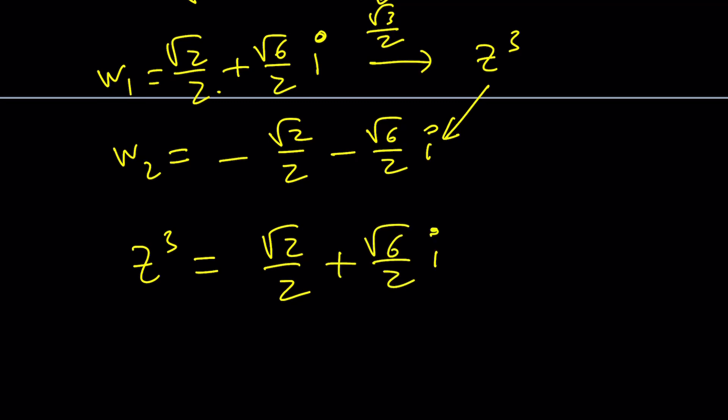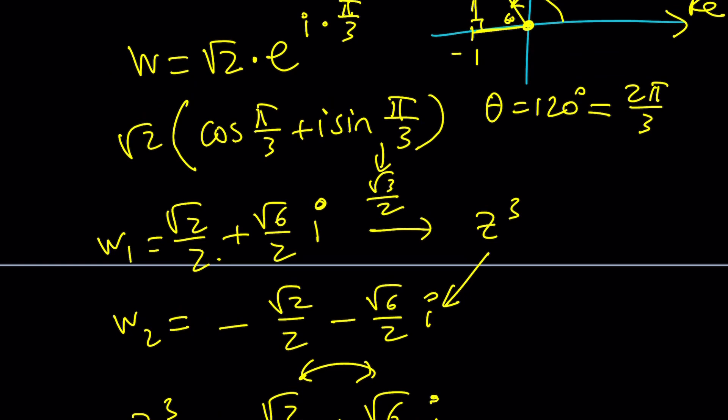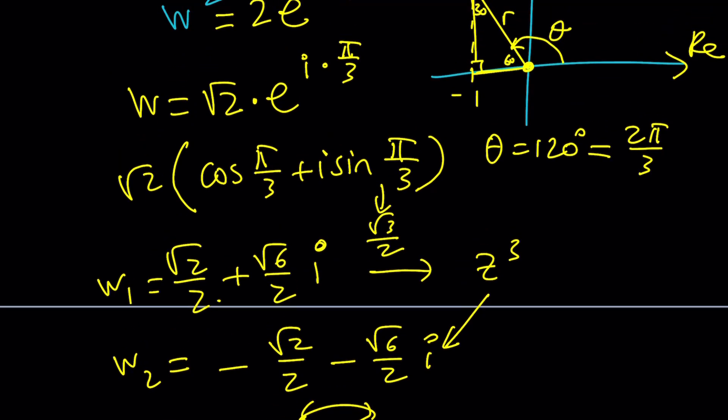If you try to find the cube root like this, it's going to be hard because what is the argument? Well, we already know that. Come on. We have w in polar form. So we don't have to go through that trouble one more time. Let's go ahead and just use this. This is w.